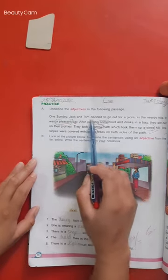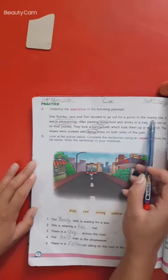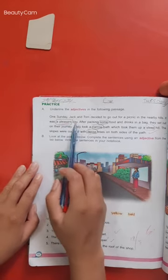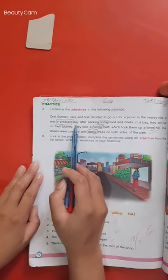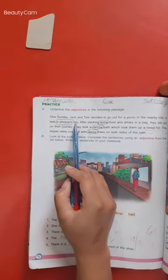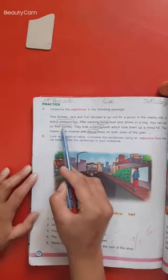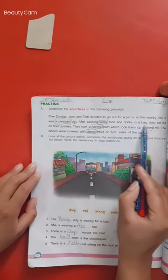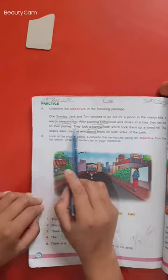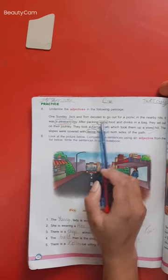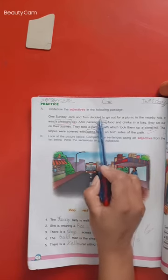On Sunday, Jack and Tom decided to go out for a picnic in the nearby hills. It was a pleasant day. Pleasant is a happy day. We are telling you that the day is a happy day. So pleasant will be an adjective. After packing some food and drinks in a bag, they set out on their journey. We will tell you about food and drinks. We have written some here.